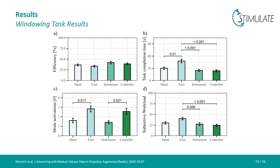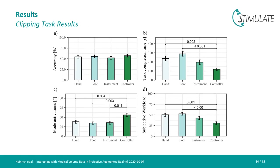The clipping task showed similar results. All concepts fulfilled the task at a similar accuracy level. Again, foot interaction was the slowest and the controller-based interaction yielded the fastest results. The controller was also perceived as least demanding and required by far the most mode activations, probably due to how easily modes could be switched. The hand gesture and instrument-based concepts performed similarly well and ranked between the controller and the foot interaction technique.